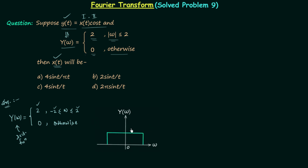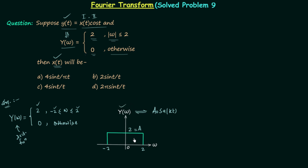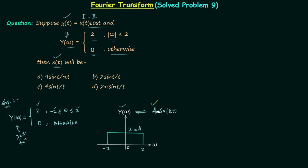The waveform will look like this: the amplitude A is equal to 2, this frequency is equal to −2, and this frequency is equal to 2. We know the time domain signal whose Fourier transform is a rectangular function is a sampling function, written as a₀·Sa(kt). The sampling function has a rectangular Fourier transform, and from here we can easily calculate a₀ and k, since the amplitude equals a₀π/k and the cutoff frequencies are ±k.